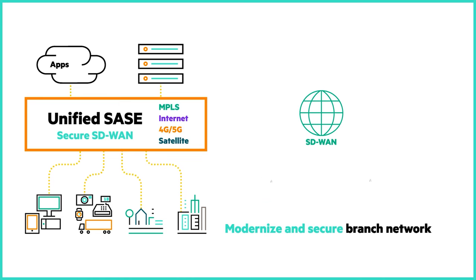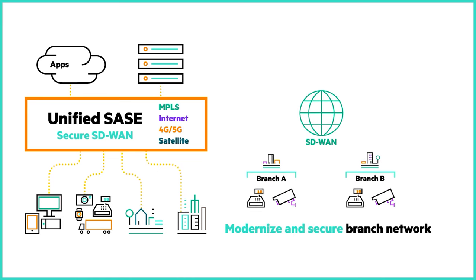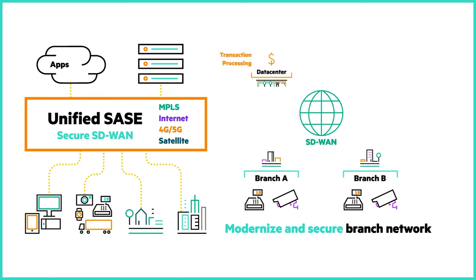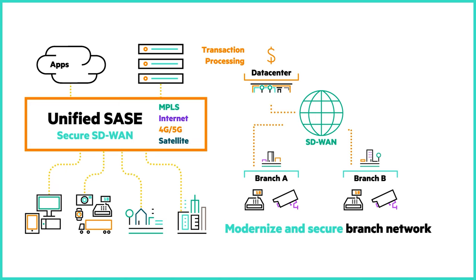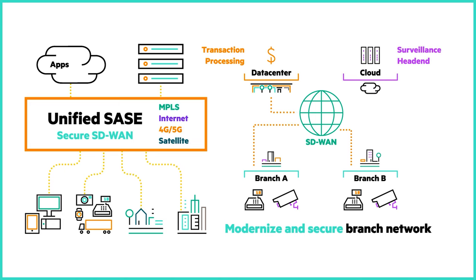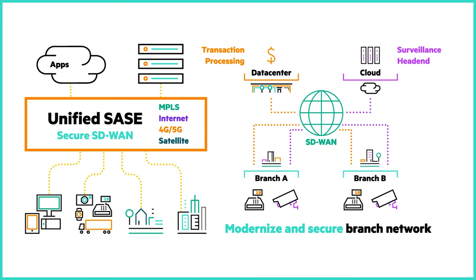Secure SD-WAN safeguards branch offices with a built-in next-generation firewall, enabling organizations to replace legacy firewalls. It also isolates IoT traffic from critical apps with fine-grained segmentation based on roles and identity.